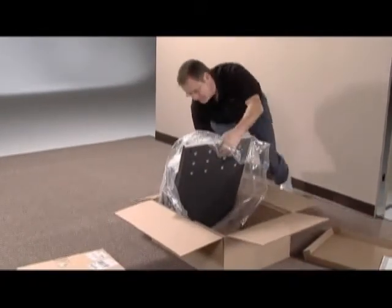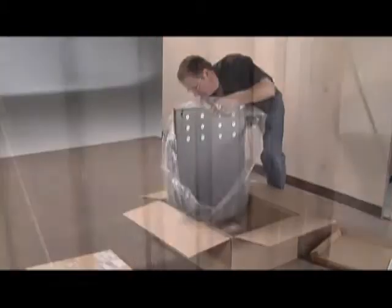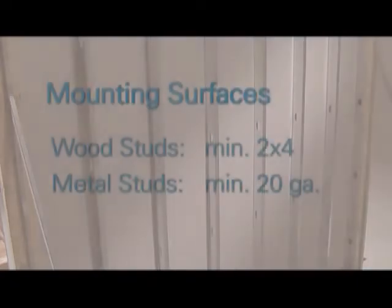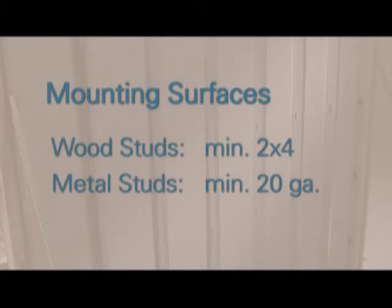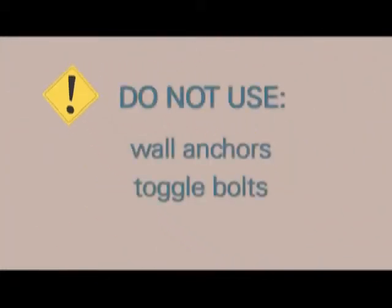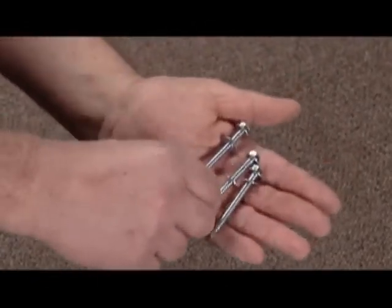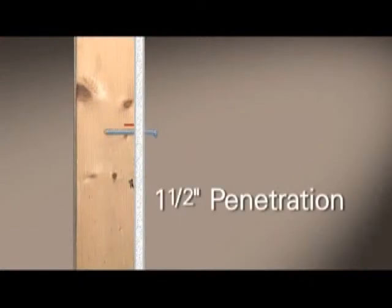The fasteners you use depend on the wall ShareLink is mounted on. ShareLink must be mounted to wall studs on 16-inch centers. Wood studs must be 2x4 or larger. Metal studs must be 20 gauge or heavier. Don't use wall anchors, toggle bolts, or other fasteners that rely on the drywall or plaster. Use number 12 sheet metal or wood screws long enough to penetrate at least one and a half inches into the studs. If you're fastening to wood studs, pre-drill the holes to prevent splitting.